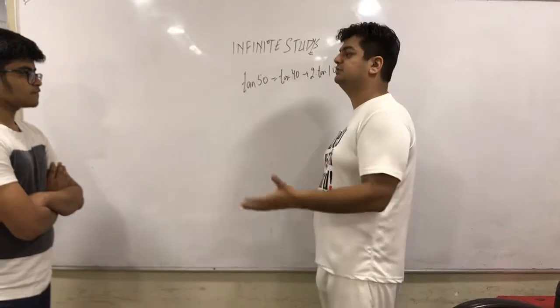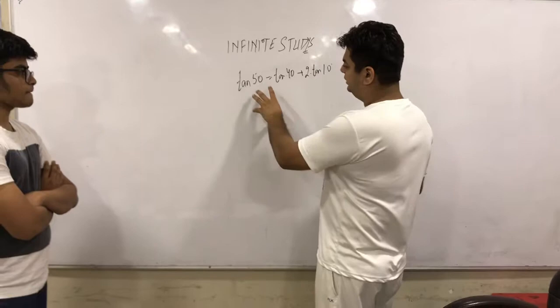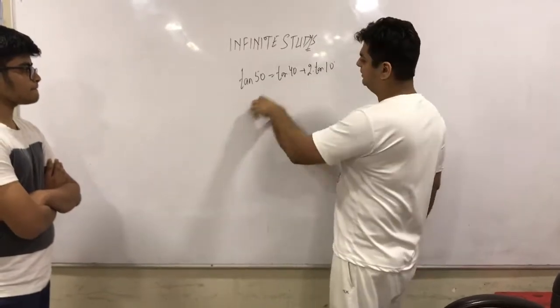And in that as well tan 60 was root 3, right? Root 3 is not an actual number, a very tedious number to handle. And now you are not giving me those 5, you are giving me a different thing also.